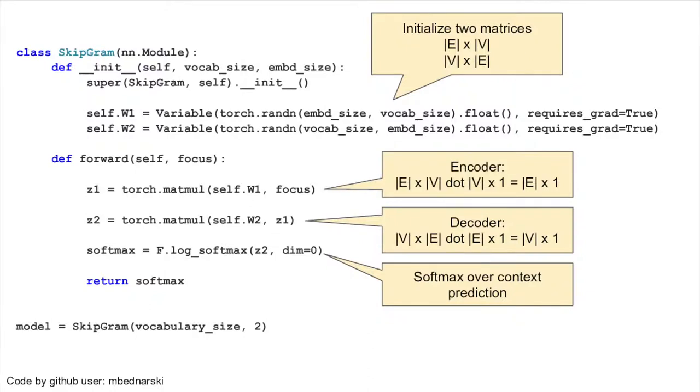The model is shown here in PyTorch. We create two weight matrices, one to encode and one to decode. To encode, the size is embedding times vocab, and to decode, it is vocab times embedding. To complete a forward pass, we will take the focus vector, which is a one-hot vector, and perform these two matrix transformations, and then take a softmax. The code here is using a log softmax that's just to be compatible with the loss. We can just think of this intuitively as a softmax.